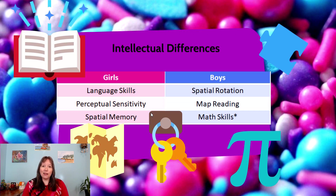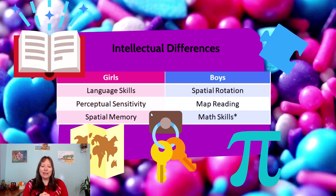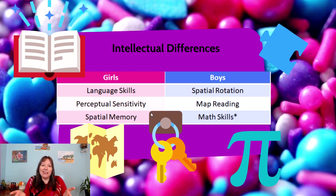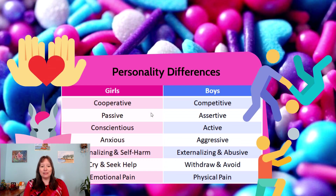One particularly controversial area is math. Originally we thought boys were better at math, then evidence suggested girls were better, then research suggested boys were better at some types and girls at others — perhaps girls better at calculations and operations, boys better at problem solving or geometry, girls better at algebra. The latest research shows boys may have a slight edge, but it's so slight it's almost negligible. Historically there's been a stereotype that boys are better at math, and there's a little evidence for it, but it's quite minor.